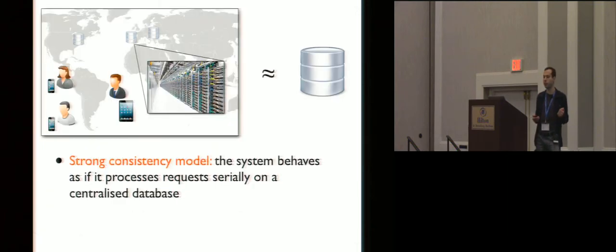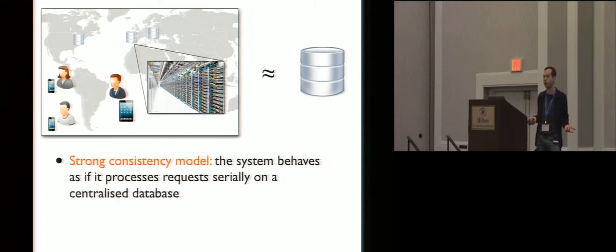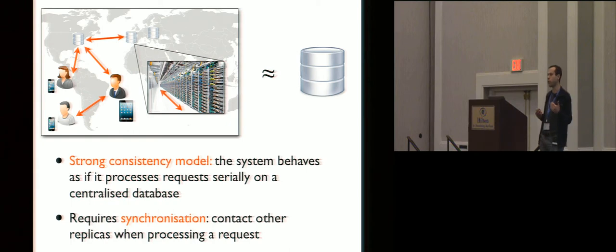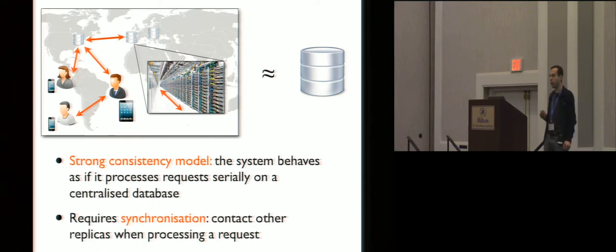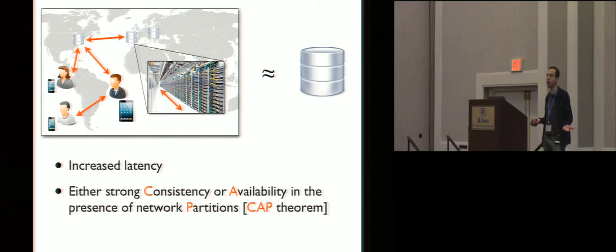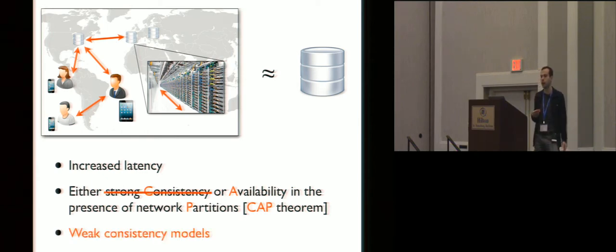Ideally, programmers using such systems would like them to provide what's called the strong consistency model, meaning that all this replication is transparent. The system behaves as if it processes requests serially on a single centralized database. Unfortunately, achieving strong consistency requires using synchronization. If a user issues a request at a replica, this replica will have to immediately contact other replicas to make sure they're in sync. This increases latency, and if network connections fail, it may force us to make the system unavailable — the consequence of the CAP theorem. So many large-scale systems nowadays give up strong consistency and provide weaker consistency models.